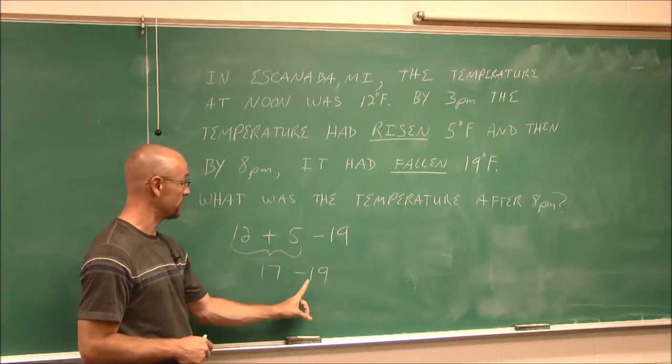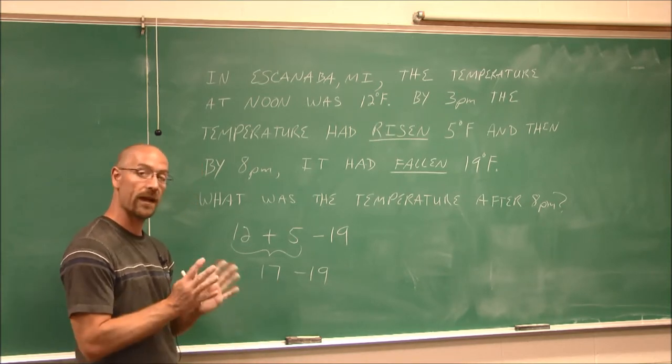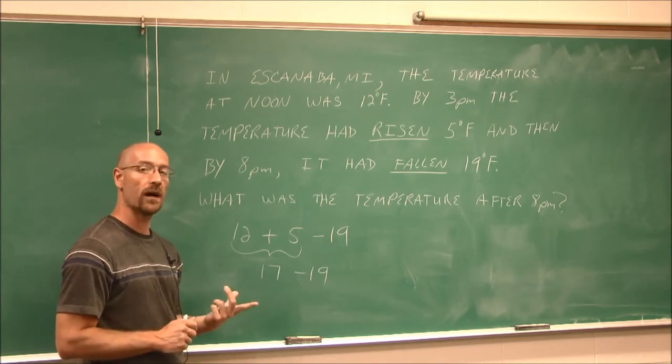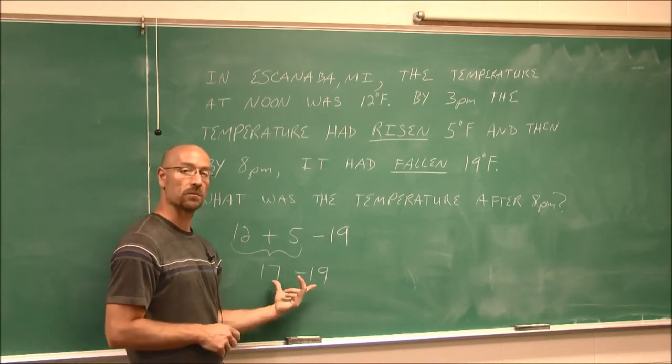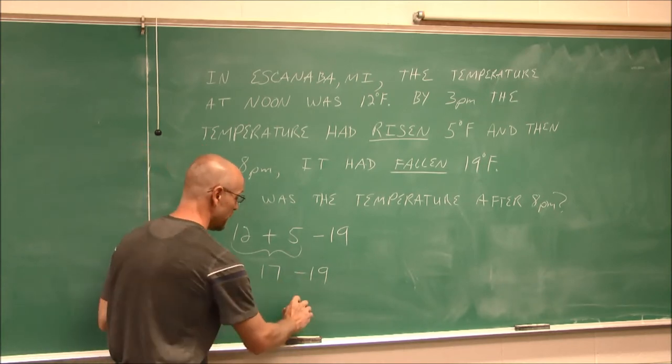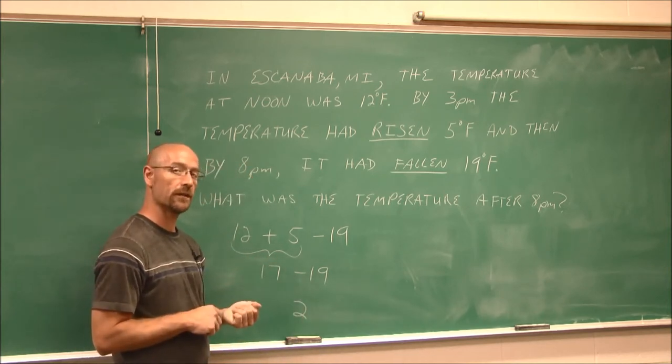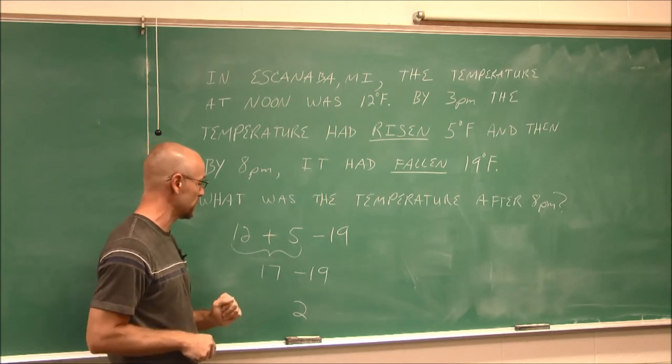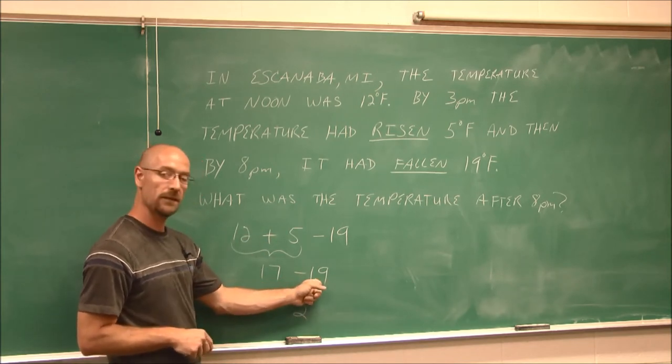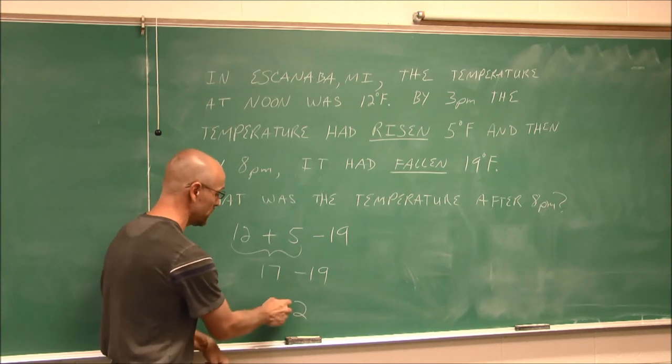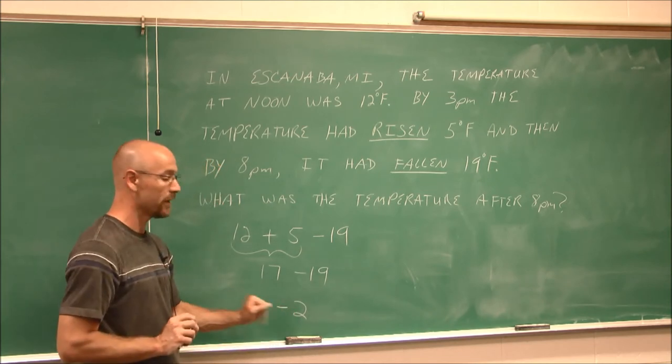I assess that 17 is positive and 19 is negative. They have different signs, so I'm going to find their difference. Well, what's the difference between 17 and 19? It is 2. But is it a positive 2 or negative 2? A question we should always ask ourselves when working with integers. And I say, the 19 is the larger value, so it's going to determine the sign. This is a negative 2.